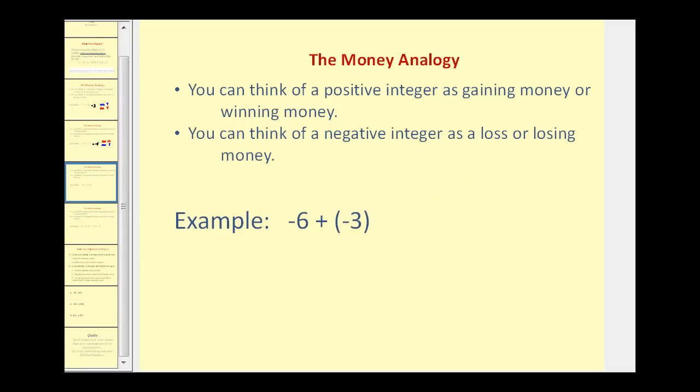Let's try a few more. Here we have negative 6 plus negative 3. Since they're both negative we have two losses. We have a loss of 6 dollars. We have another loss of 3 dollars. So if you lose 6 dollars and then you lose 3 dollars where would you be? You would have a total loss of 9 dollars. Therefore this sum is negative 9.